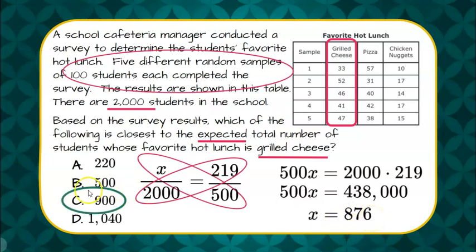Which means my prediction would be closest to C. 900 students out of 2,000 would like grilled cheese. That's how you use data to make an inference.